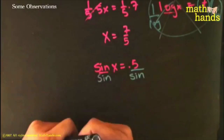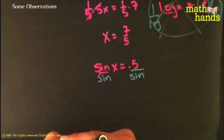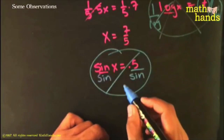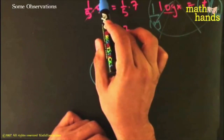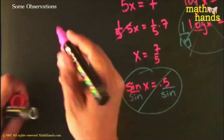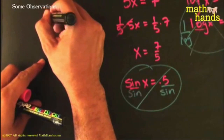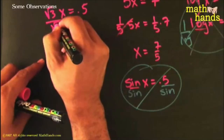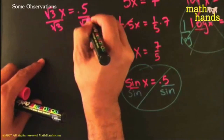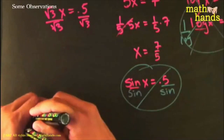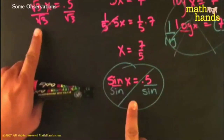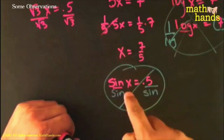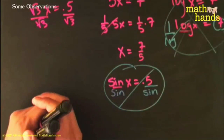The whole topic of this section is a cautionary one - just some observations and things to be careful about. Don't ever do this. You cannot, even though you could do it with a number. For example, if you have √3 · x = 0.5, this would be legal - you could divide both sides by √3 and that would cancel, solving for x. It's legal there but not legal with sine, because √3 is a number while sine is a function.